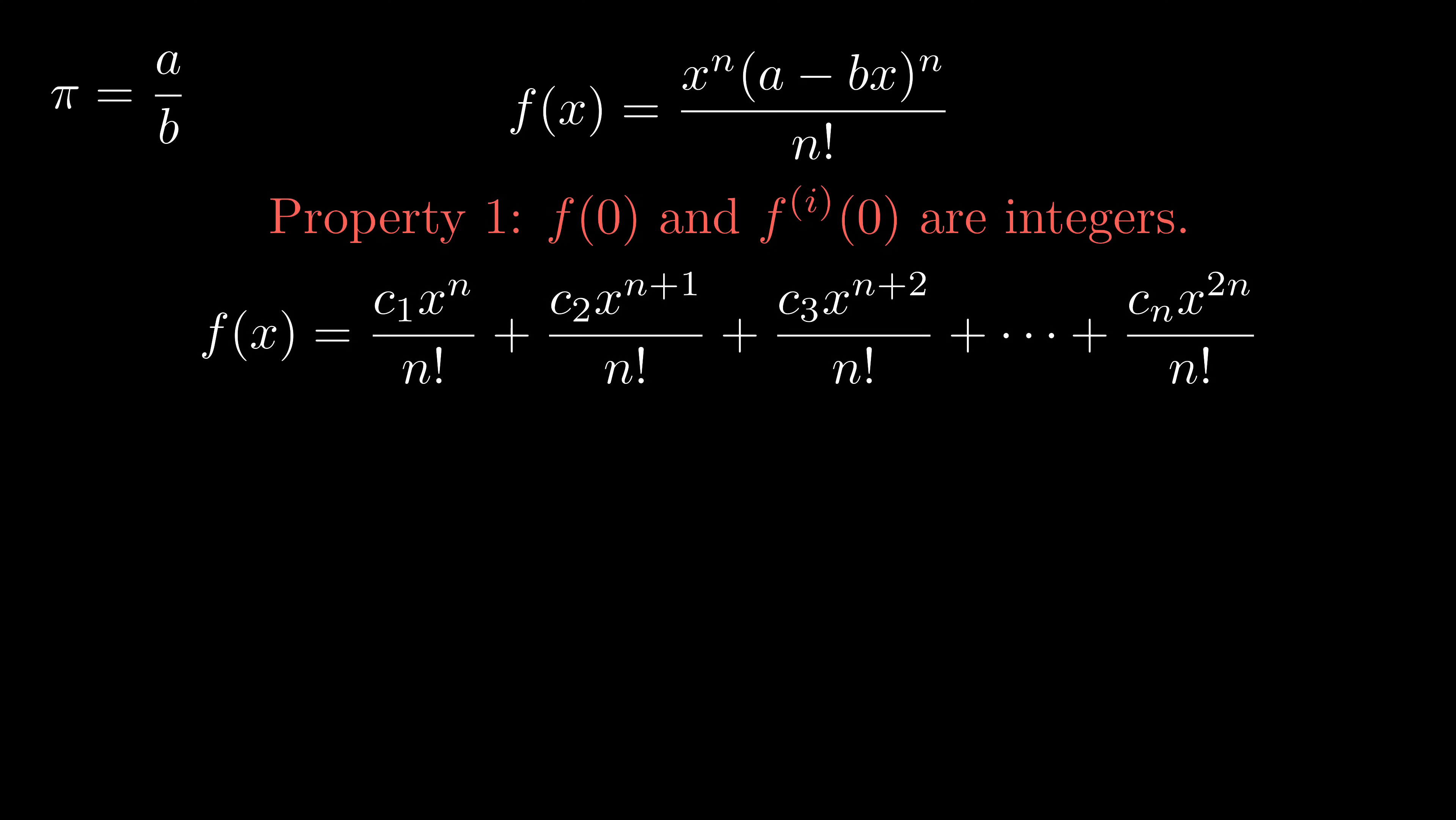The i-th derivative of f(x) has two cases. The first case is that i is less than n, including 0. In this case, each term will still have x to the power of a positive integer. Therefore, we substitute 0, we get 0. And we don't care about the d coefficients.